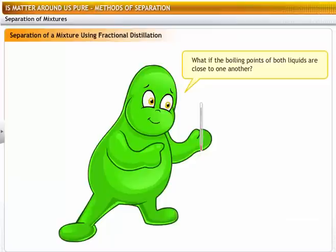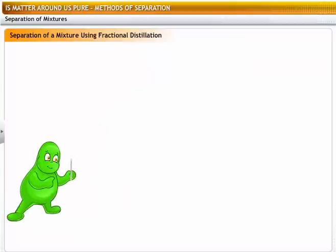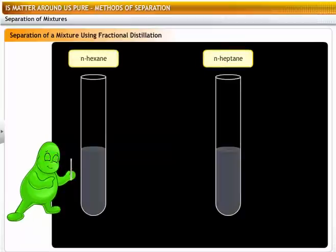What if the boiling points of both liquids are close to one another? In case the difference in the boiling points of the liquid is less than 25 Kelvin temperature, you can use the fractional distillation method.